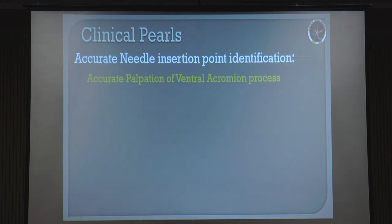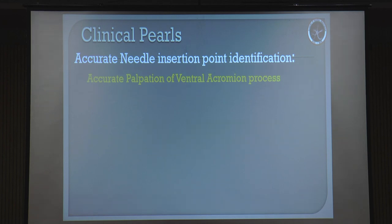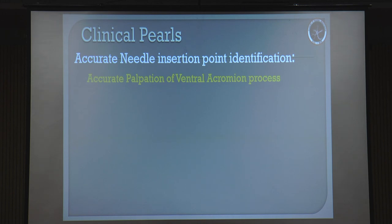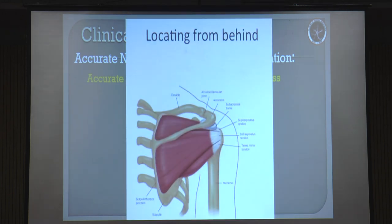Critical factors first in VIB. Accurate palpation of the acromion process is the most important thing, because just as with the coracoid process, you have so many bony landmarks here. You have to accurately palpate the acromion process, because the jugular fossa is easy to find but the perfect palpation of the acromion process is required since your needle insertion point depends on that. How do you do that? Look at it from behind.